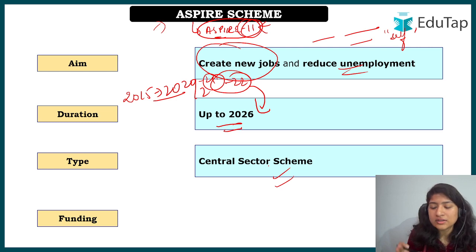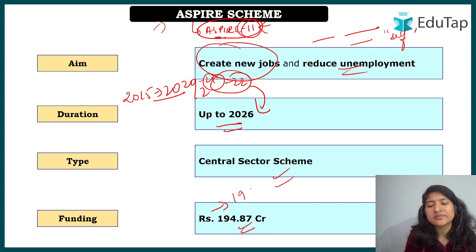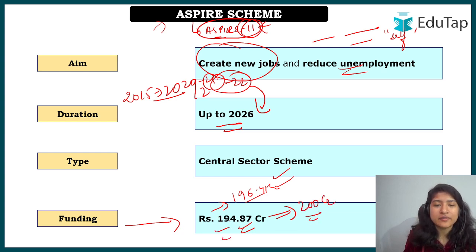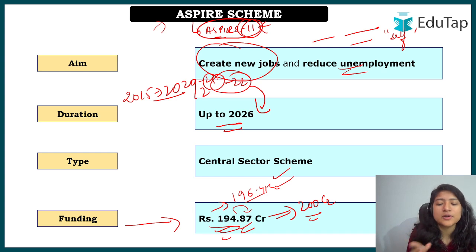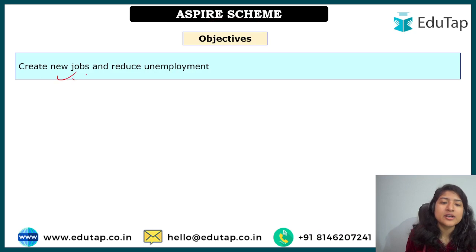ASPIRE is a Central Sector Scheme, meaning the state government does not play a role in its funding. The funding allocated is ₹194.87 crore. The originally proposed amount was around ₹196.47 crore, but ₹194.87 crore was the actual allocation. Some sources round this to ₹200 crore, but the official notification of the extended phase mentions ₹194.87 crore.